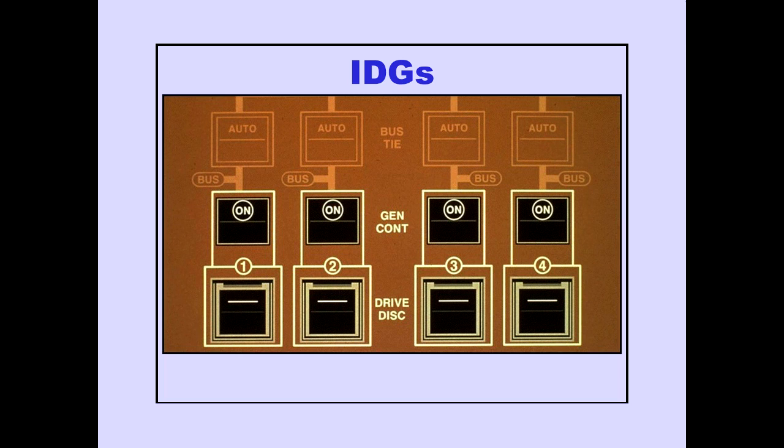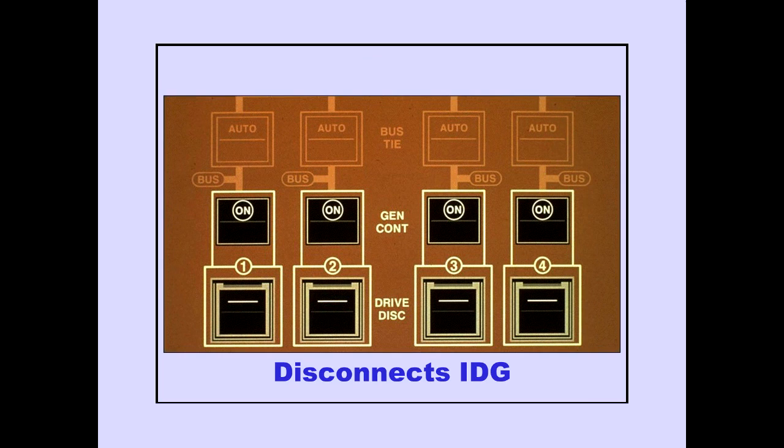Generator control and generator drive disconnect switches are provided for each IDG. The generator drive disconnect switches are momentary action guarded switches and are provided for manually disconnecting the IDG from its respective engine. After disconnect, the IDG can be reconnected on the ground only.